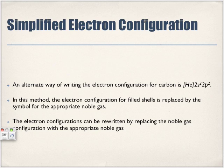Simplified electron configuration. So this is how we're going to simplify some of them. An alternate way of writing the electron configuration for carbon is [He] 2s² 2p².